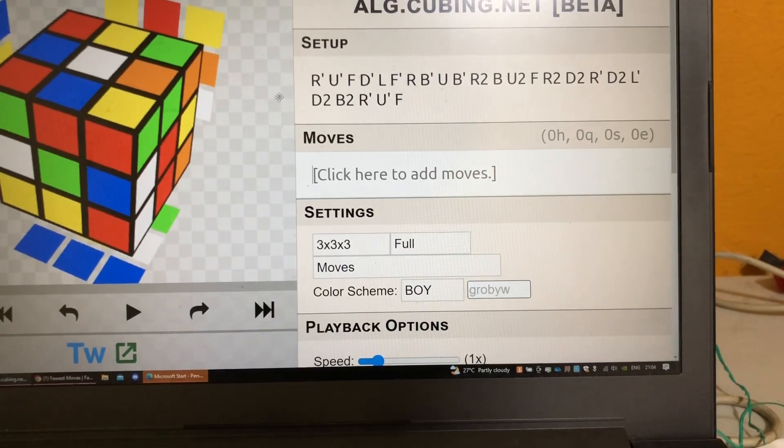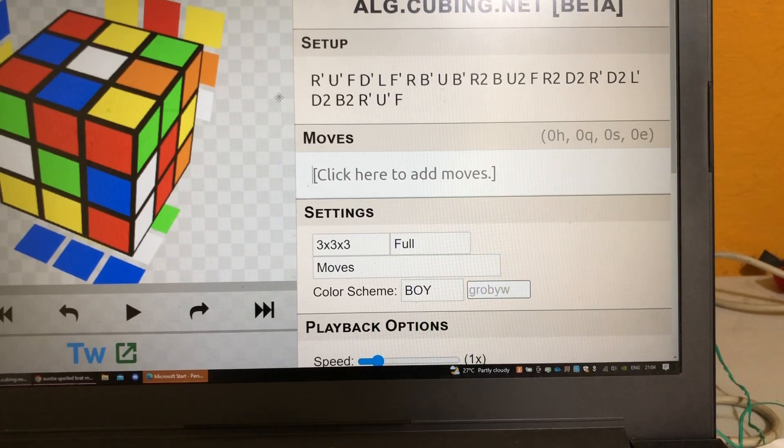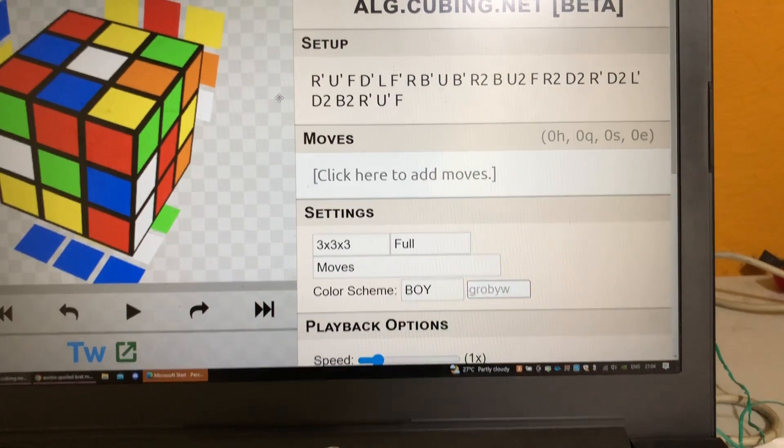I'm going to explain my 22.00 FMC mean that I set at Malaysia Cube Championship 2022. This mean is WR4 in the world at the time of this recording, so that's pretty cool.